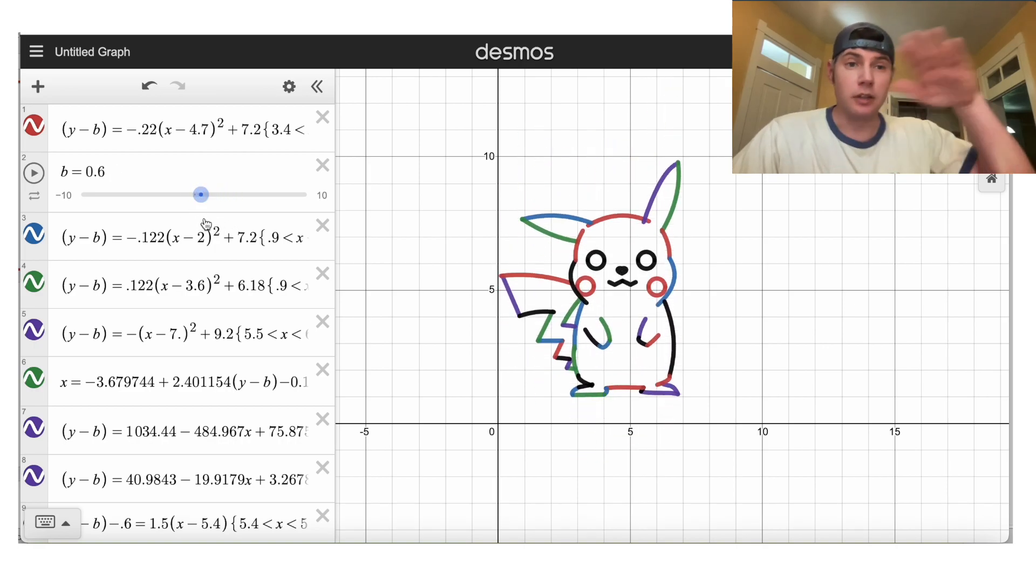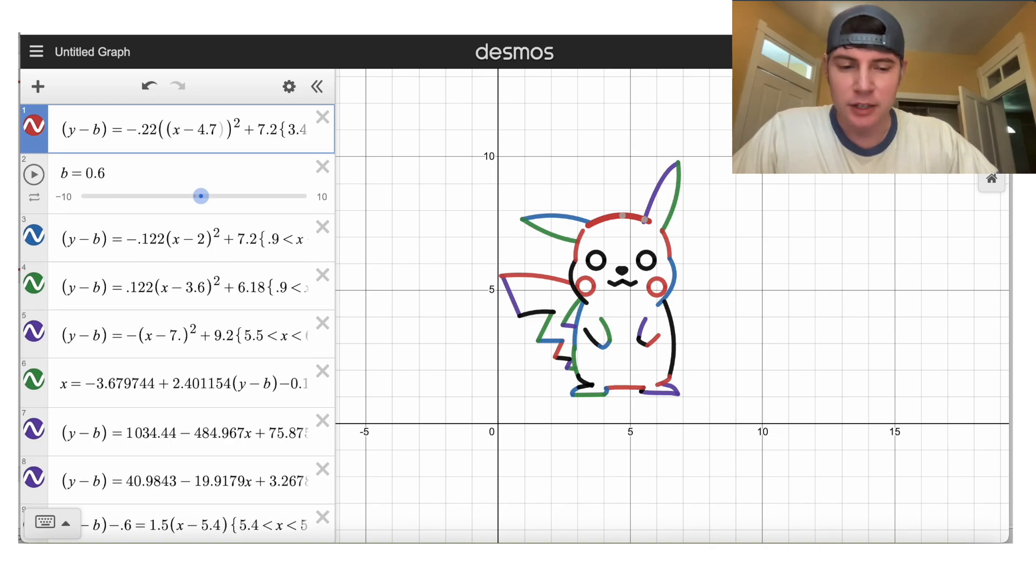So now I wanna make him hop left and right. So we're gonna change all the Xs into X minus A. So I'll put parentheses down, X minus A,